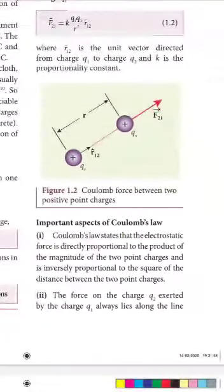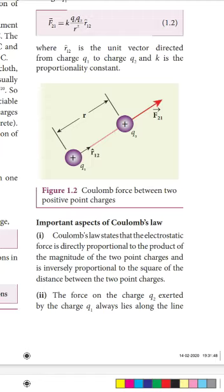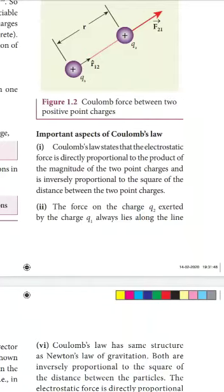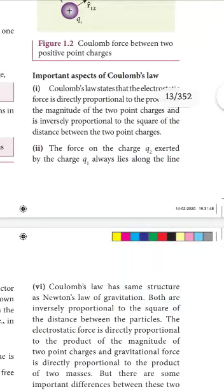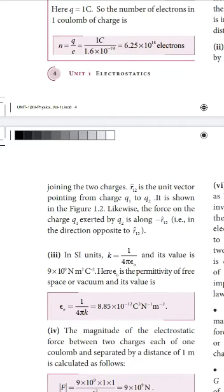The important aspects of Coulomb's Law are given in points. The first point is the definition: Coulomb's Law states that the electrostatic force between two charges is directly proportional to the product of the magnitude of the two point charges, and inversely proportional to the square of the distance between them. The second point states that the force on charge q2 exerted by charge q1 always lies along the line joining the two charges.